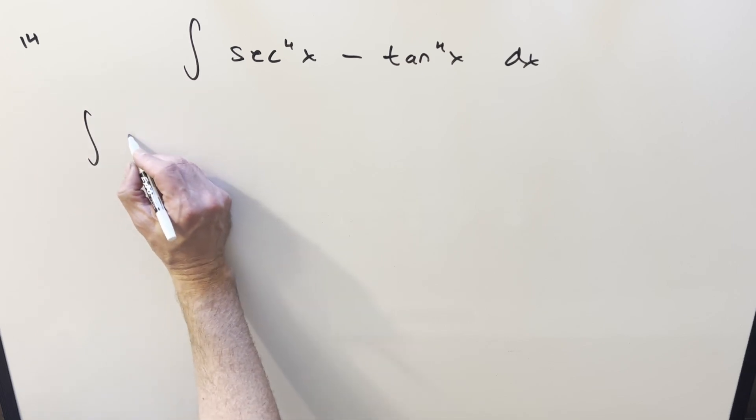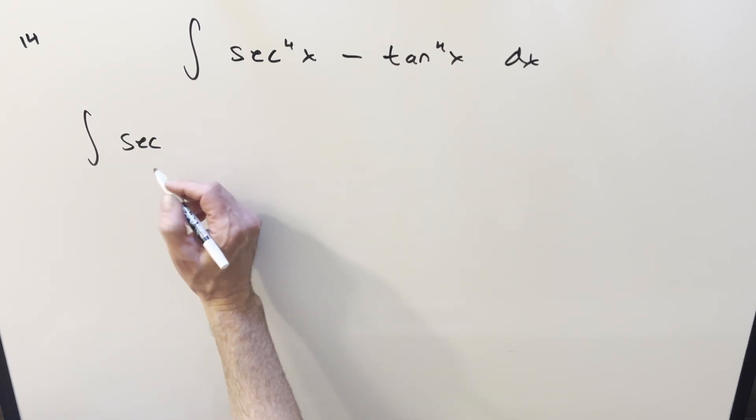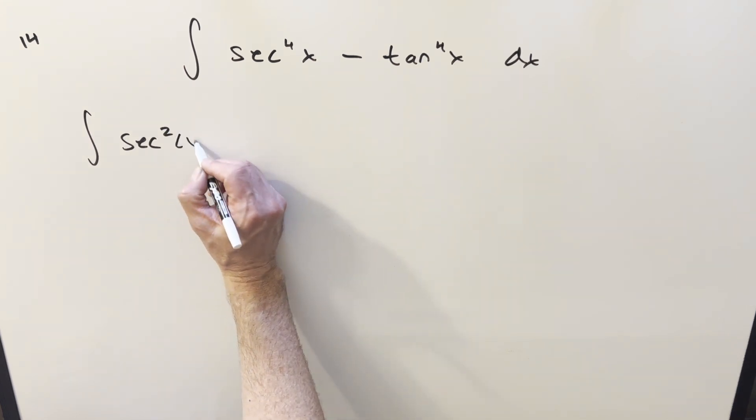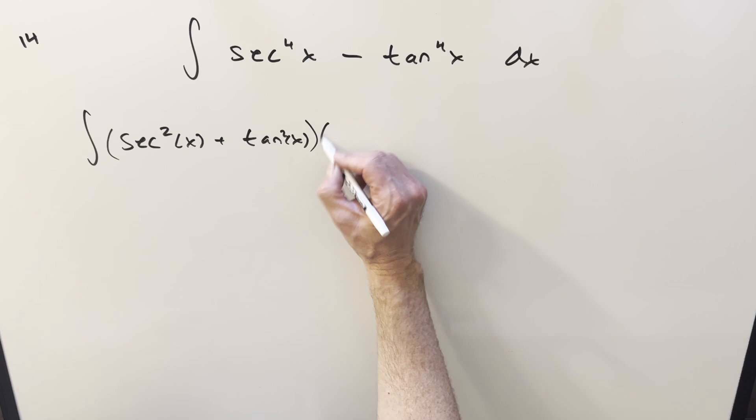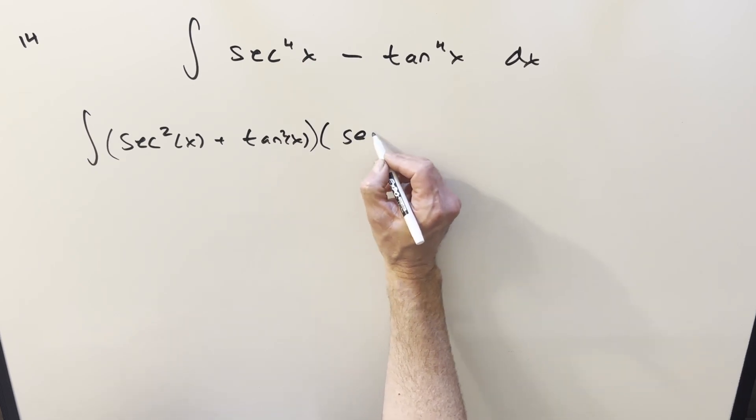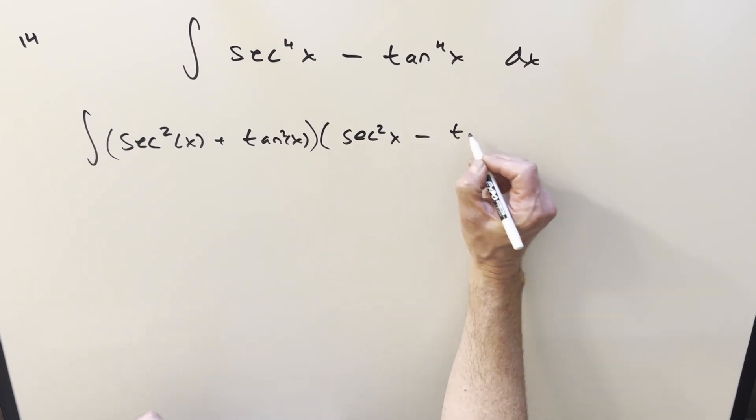I can rewrite it as, if we look at it as secant squared squared and tan squared squared, I can write this as secant squared of x plus tan squared of x, and then multiply it by secant squared x minus tan squared of x.